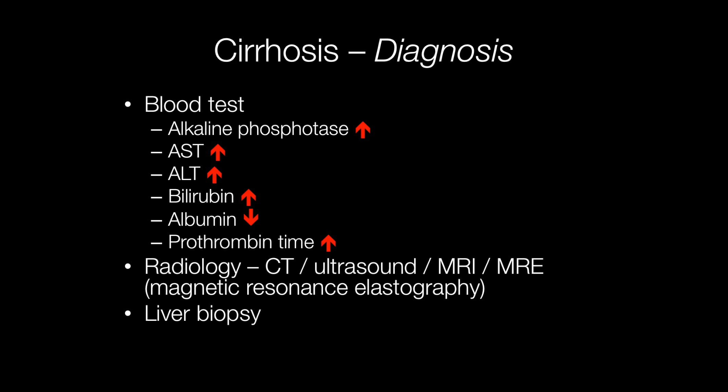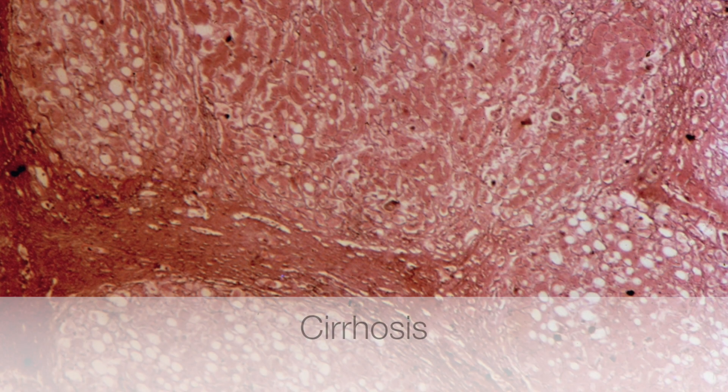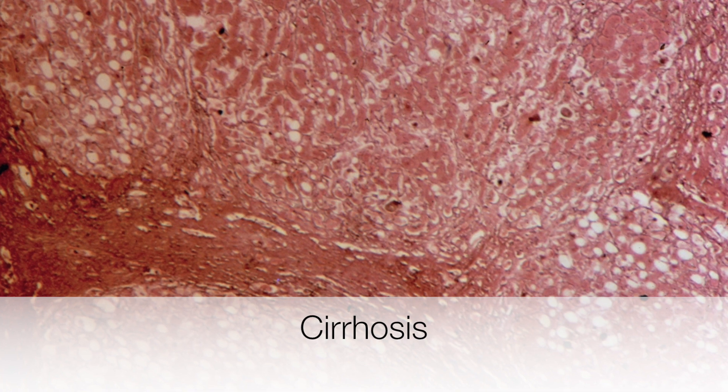Liver function blood tests are useful in the diagnosis of cirrhosis. Alkaline phosphatase, AST, ALT, and bilirubin are all raised, while albumin is decreased and prothrombin time is increased. Useful radiological investigations include CT, ultrasound, and MRI. MRE — magnetic resonance elastography — shows the stiffness of body tissues including the liver. The most invasive way of diagnosing cirrhosis is, of course, a liver biopsy, and here is a liver biopsy showing features of cirrhosis.